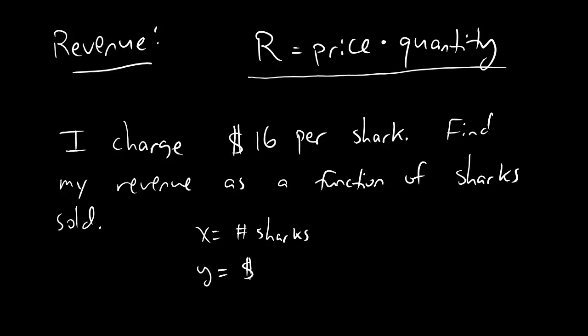Well, just like before, we're going to have x equals number of sharks, and y equals dollars. So my revenue as a function of x is going to be price times quantity. And so what's the price? It's $16 per shark, so it's just 16. I'm going to multiply that by my quantity. And my quantity is just the variable x.